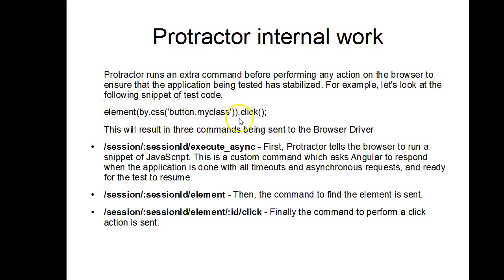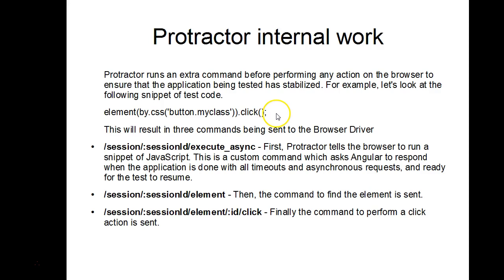The code before `.click()` is for finding the element using CSS. In Selenium we use `driver.findElement`, but in Protractor it's simply `element()` — because Protractor is a wrapper. To locate any element you call the `element()` method, pass `by.css()` with the CSS selector of that button, and then call `.click()`. This is the simple operation to click on any button in the application.